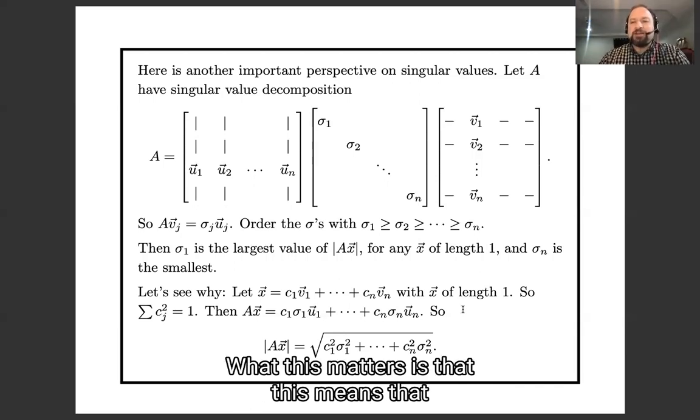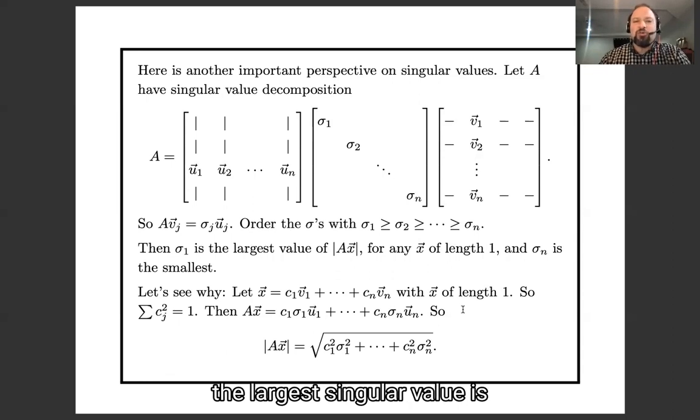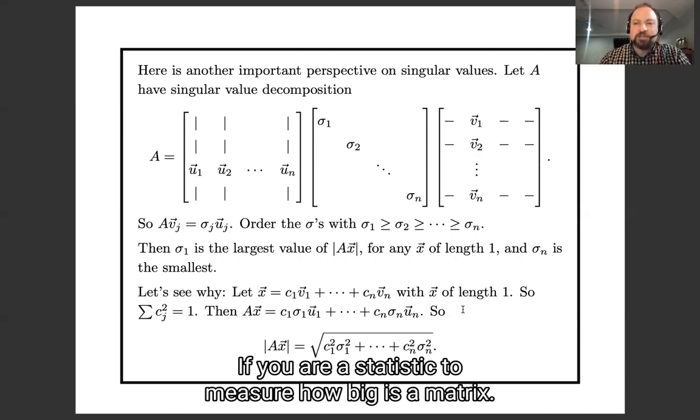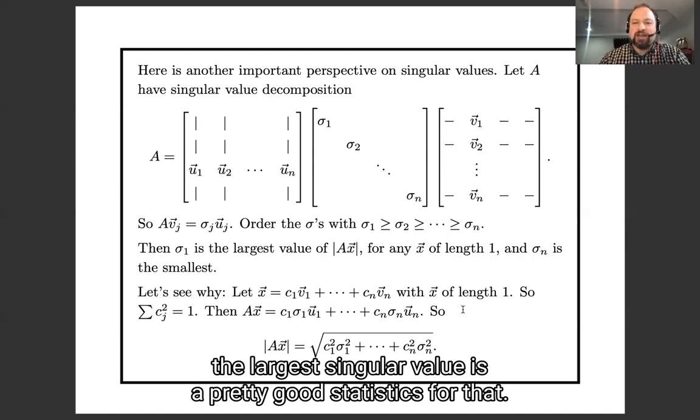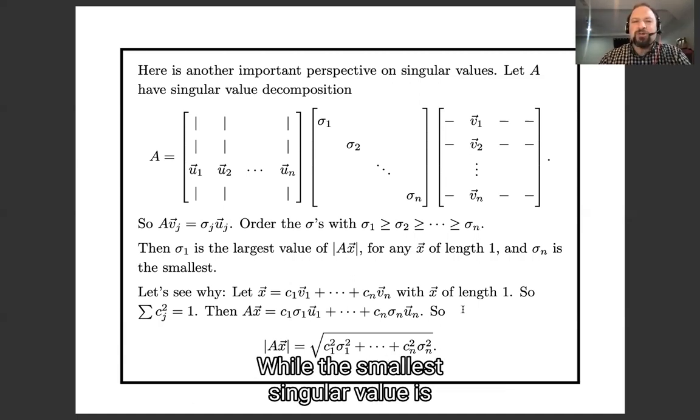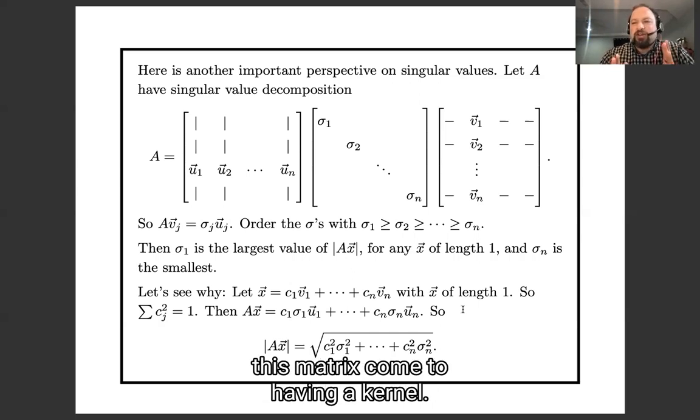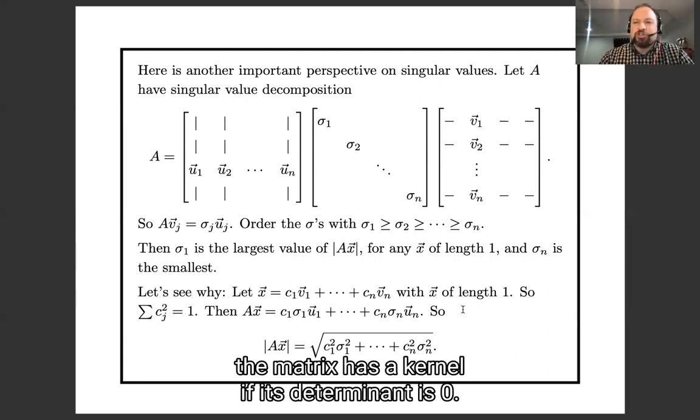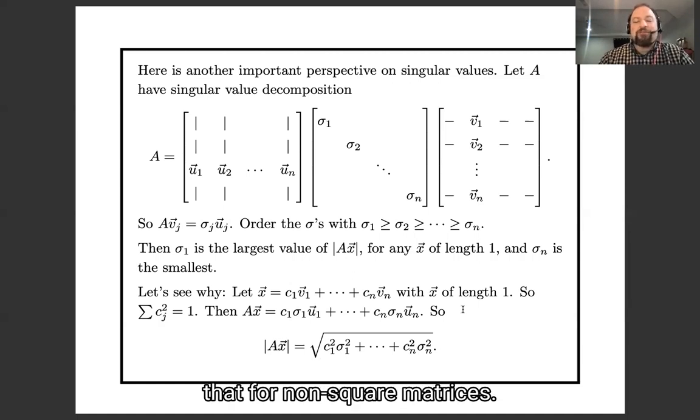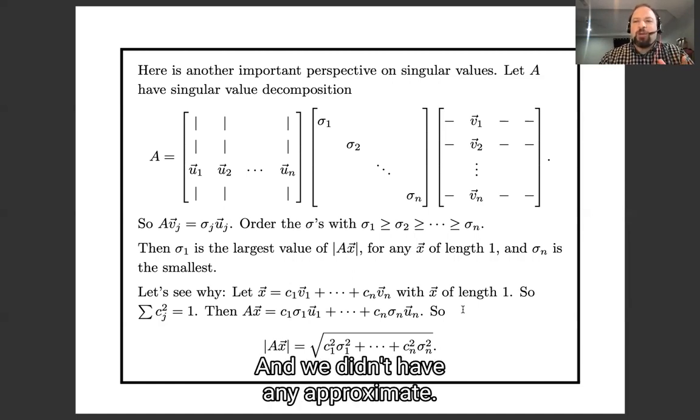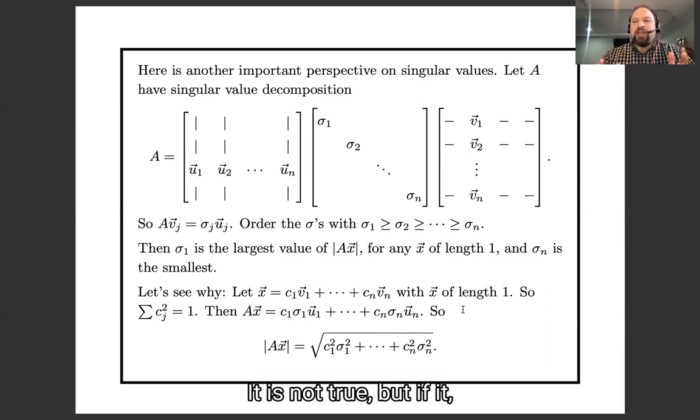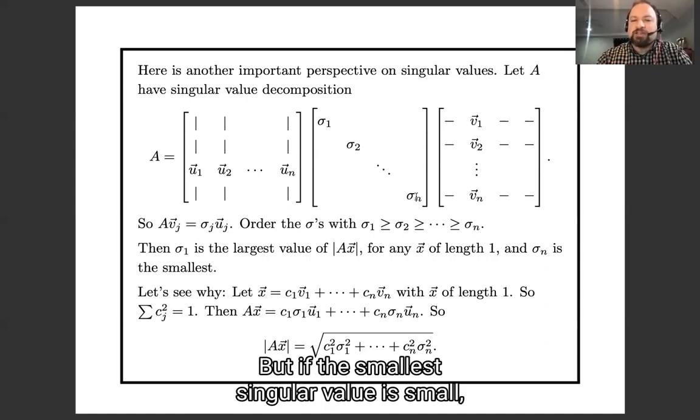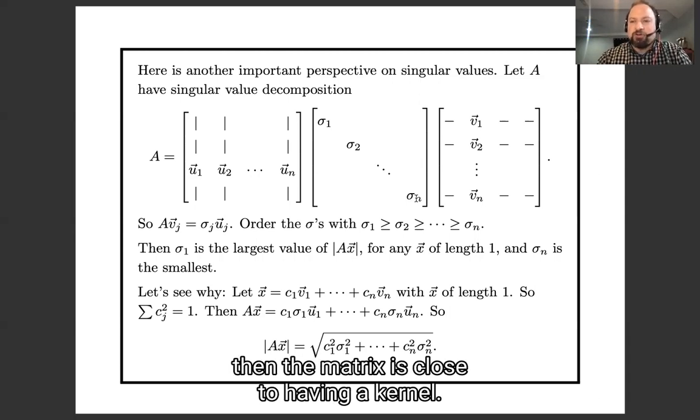Why does this matter? One reason it matters is that the largest singular value is a good heuristic for how big is this matrix. If you want a statistic to measure how big is a matrix, the largest singular value is a pretty good statistic for that. And the smallest singular value is a good statistic for how close does this matrix come to having a kernel. So for square matrices, we learned a while ago that the matrix has a kernel if the determinant is 0. But we didn't learn anything like that for non-square matrices, and we didn't have any approximate statement.